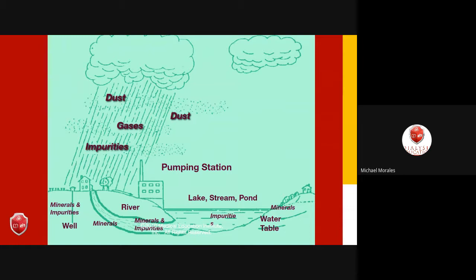This cycle continuously moves water on earth — it doesn't disappear, just changes form. More people and plants on earth means more water held in them. Droughts in areas like California affect agriculture and water rationing, but there is no shortage of water on earth overall; it's just a matter of the source.